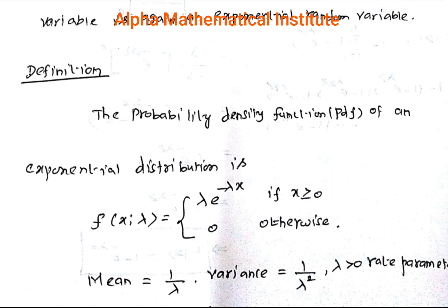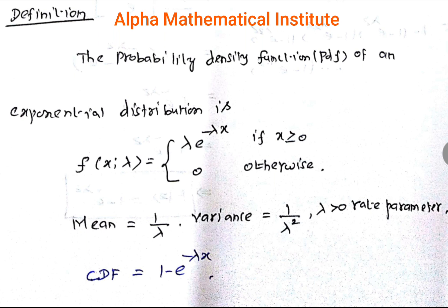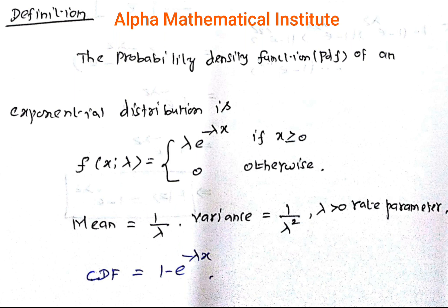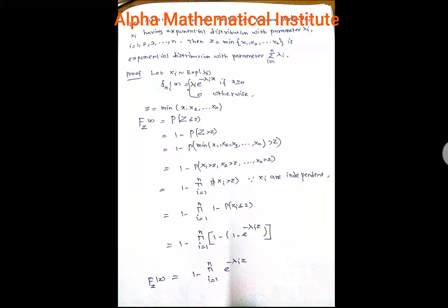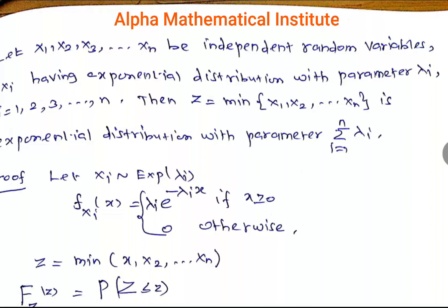A random variable X is said to follow exponential distribution if its probability density function is: lambda times e to the power minus lambda x, if x is greater than or equal to 0, and equals 0 otherwise. The mean value of an exponential random variable is 1 by lambda, the variance is 1 by lambda squared, where lambda is called the rate parameter, and the cumulative distribution function is 1 minus e to the power minus lambda x. Knowing these facts, we can prove the result.